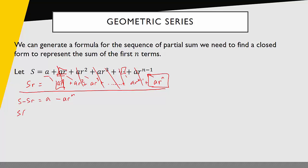Now I can solve for S. I factor S out of the left side, factor a out of the right side, and divide through by 1 minus r. Now I have an expression for the nth partial sum: S_n = a(1 - r^n) / (1 - r). This expression is very useful — it lets me calculate the sum of n terms of a geometric series. In some applications I have a finite geometric series, and it's convenient to have this closed-form expression.